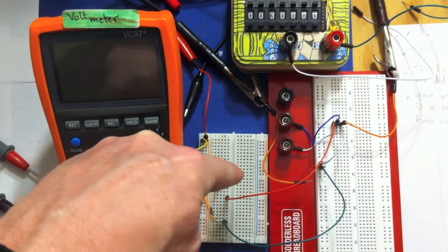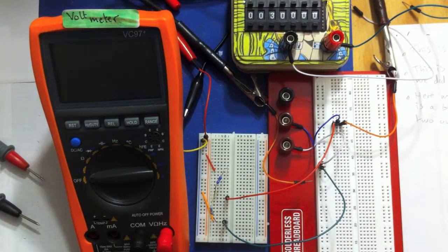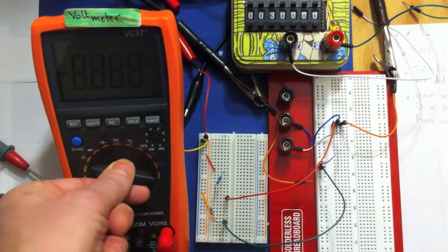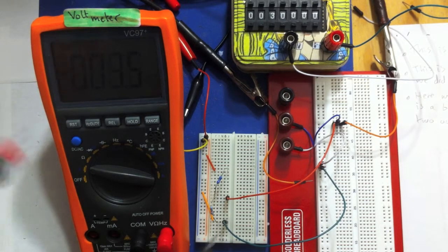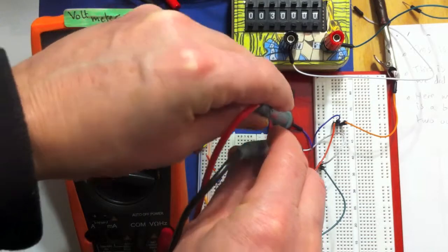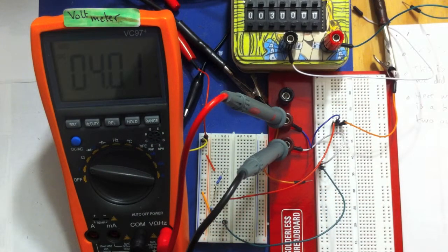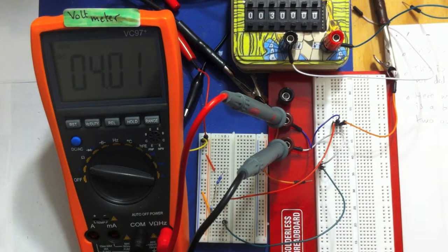I'm going to switch on the voltmeter and then drop the leads in so that we can measure the voltage. OK, so we're seeing there four volts. So that means our Thevenin voltage is four volts.